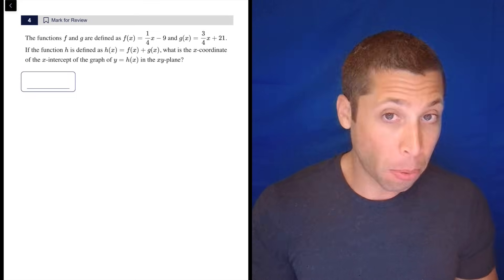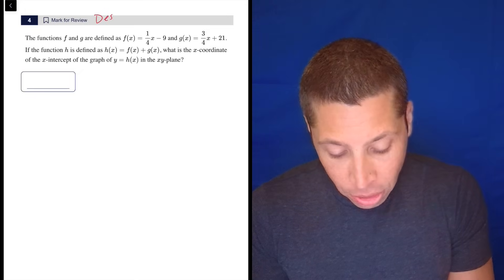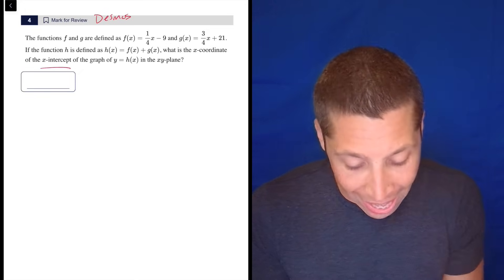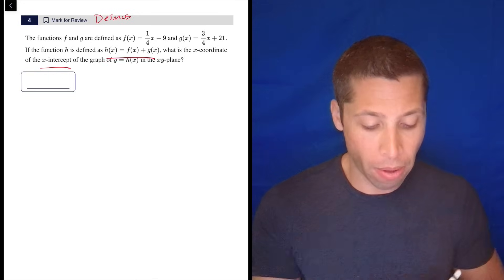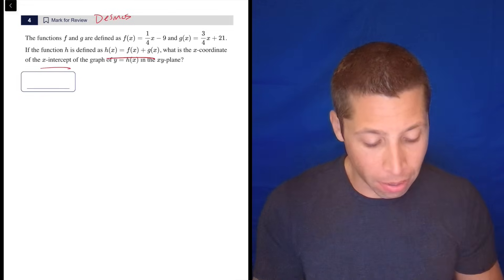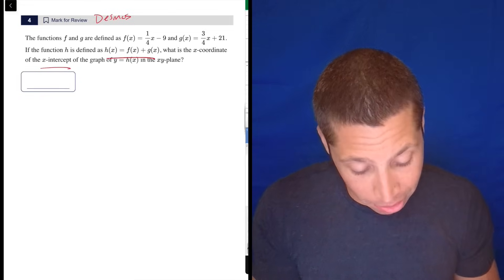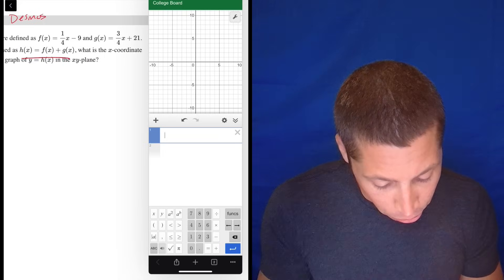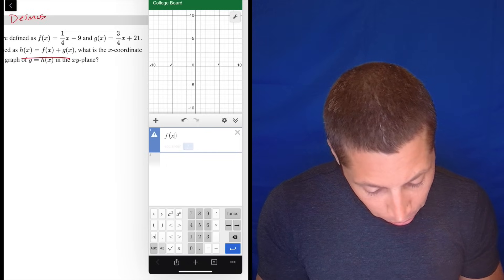So I'm going right to Desmos. I just don't trust myself. I understand all the pieces, right? I understand what an x-intercept is. I understand what it means to do f(x) plus g(x). I would just need to add the two equations, but I just don't trust it. So let's go to Desmos. And there's a lot of things you can do here, but my thing is always like, keep it simple.